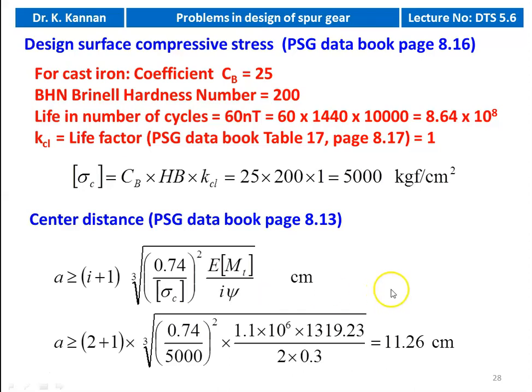We calculate the center distance. The equation is available on page number 8.13: A ≥ (I + 1) × ∛[0.74 / σC² × E × MT / (I × ψ)]. Substituting numerical values: A ≥ (2 + 1) × ∛[0.74 / 5000² × 1.1 × 10⁶ × 1319.23 / (2 × 0.3)]. The center distance A ≥ 11.26 cm.